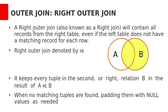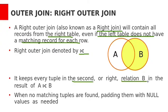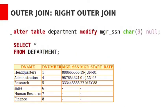Let's see right outer join. Right outer join, also known as right join, contains all records from the right table even if the left table does not have matching rows for each row. Right outer join is denoted with this symbol in relational algebra. It keeps every tuple in the second (right) relation B in the result of A right outer join B. When no matching tuples are found in the left-side relation, all attributes within that relation are paired with null values. Here the department table is modified — the manager SSN column had a NOT NULL constraint.